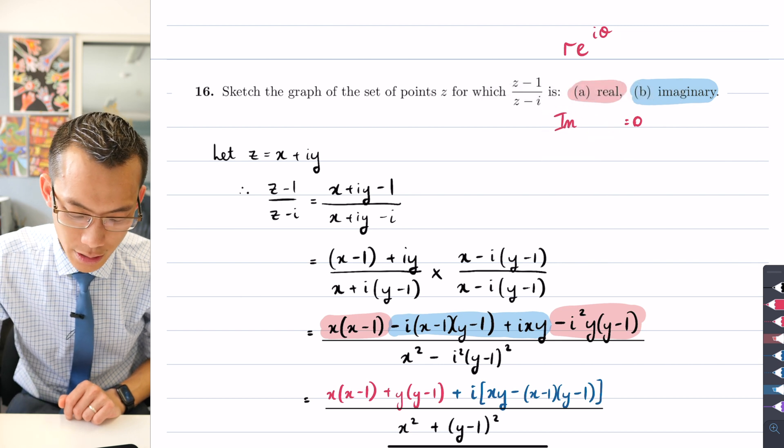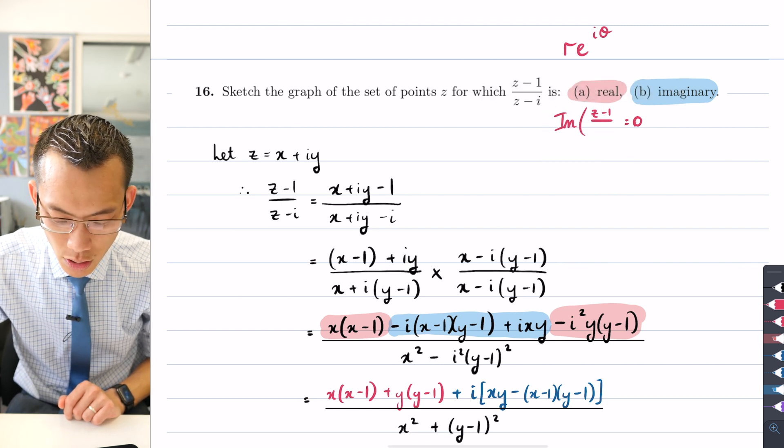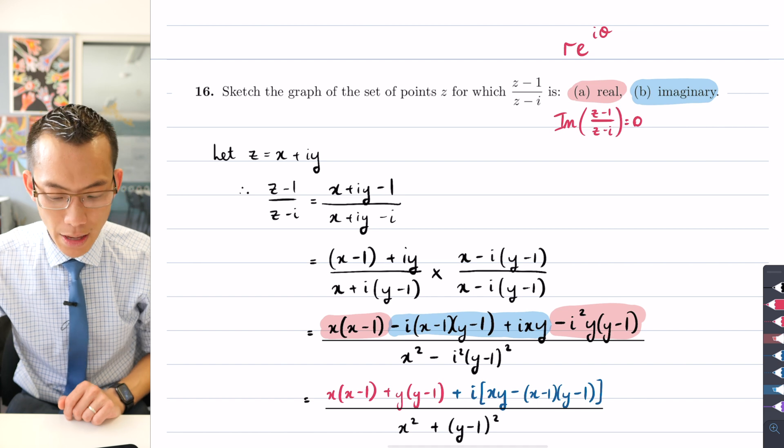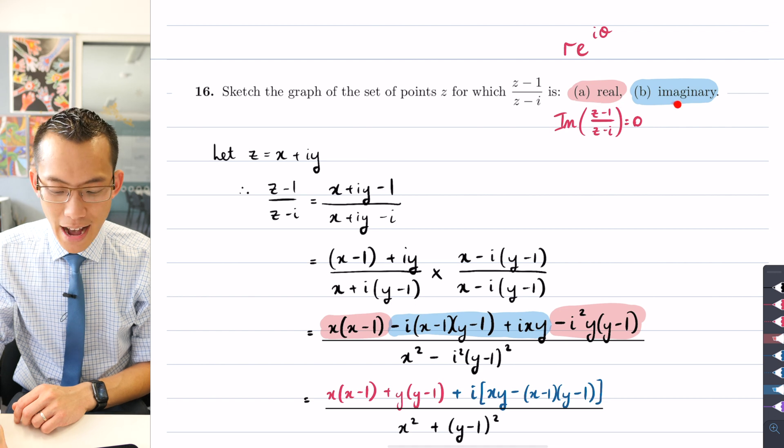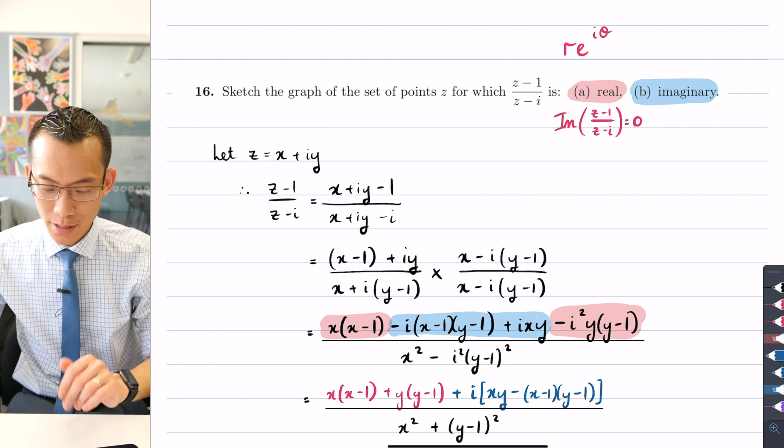In fact, it's not the imaginary part of z, it's actually the imaginary part of this whole awkward fraction here. So it's actually going to be (z - 1)/(z - i). If that imaginary component there is zero, then I should get a real number.